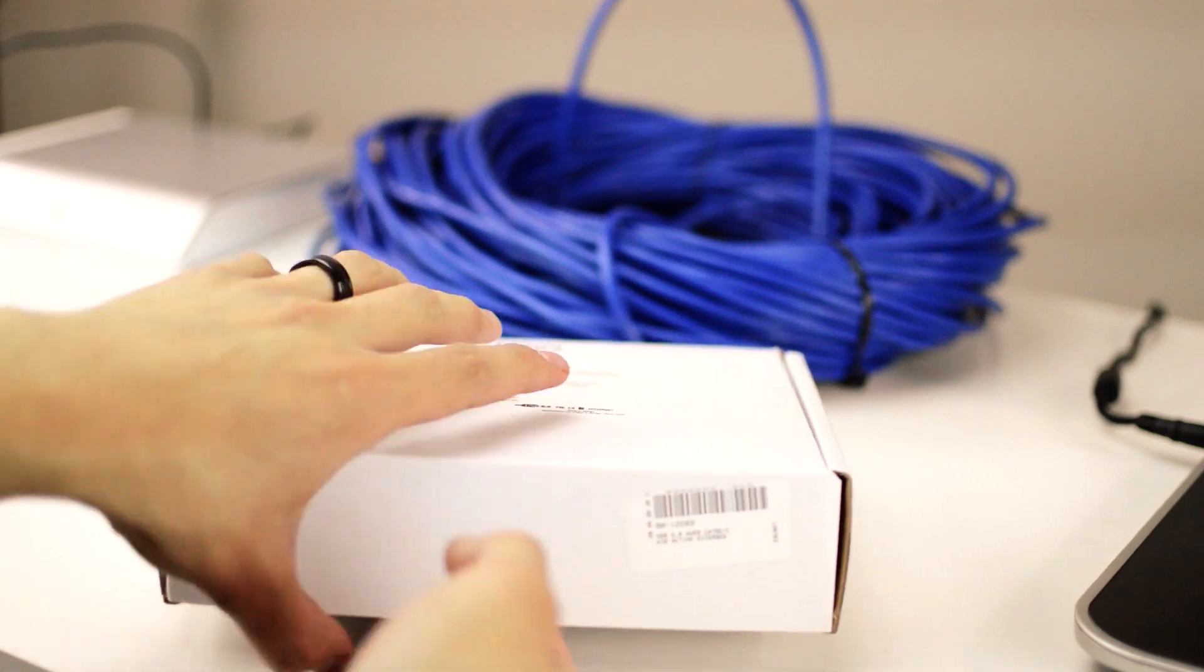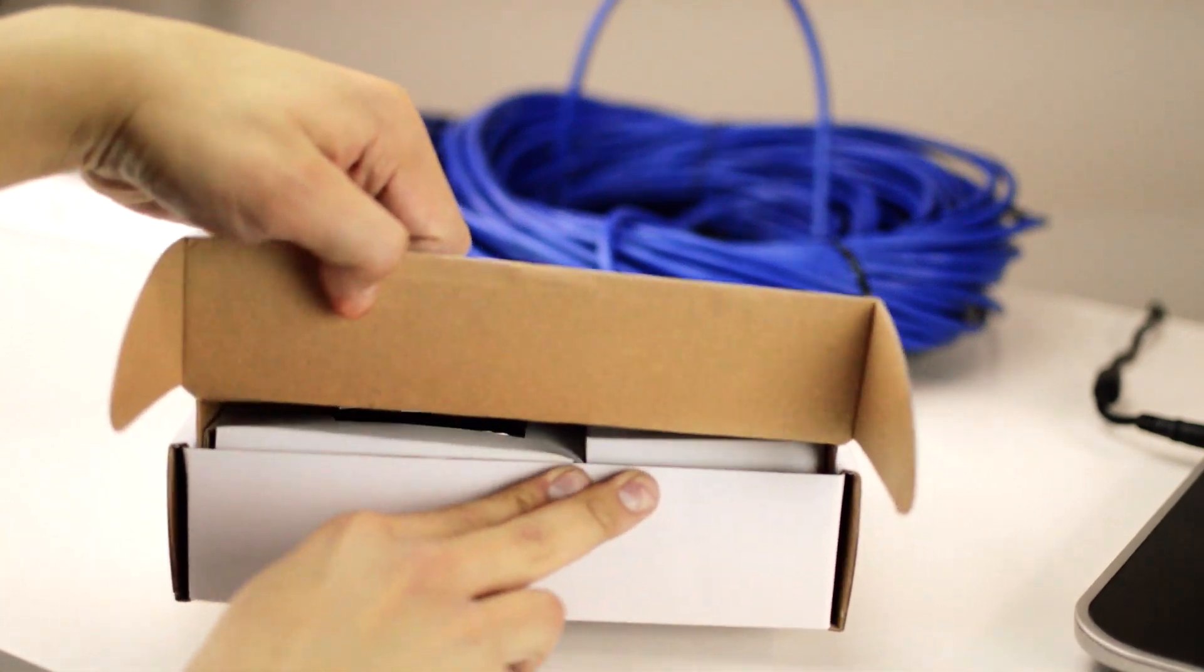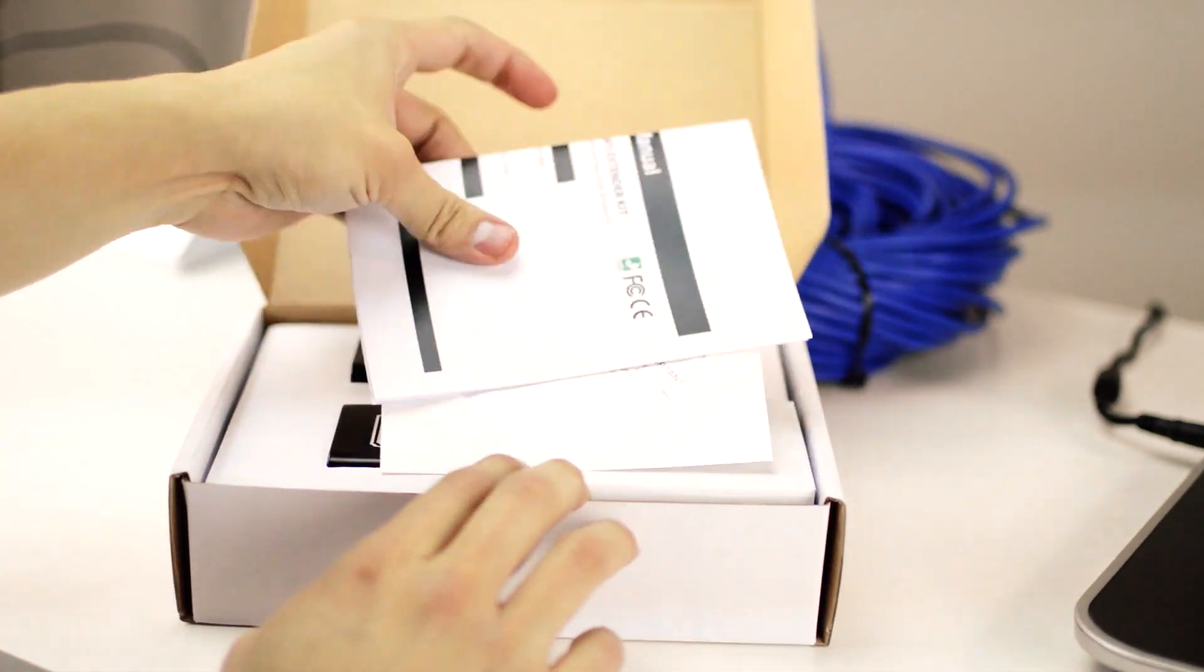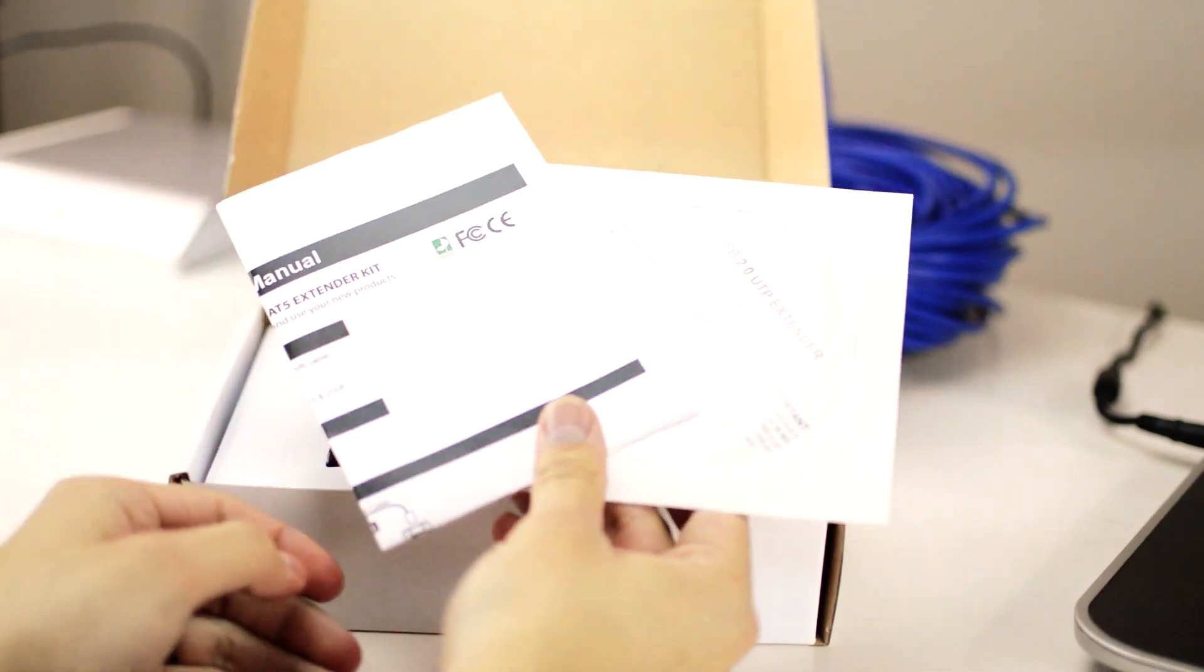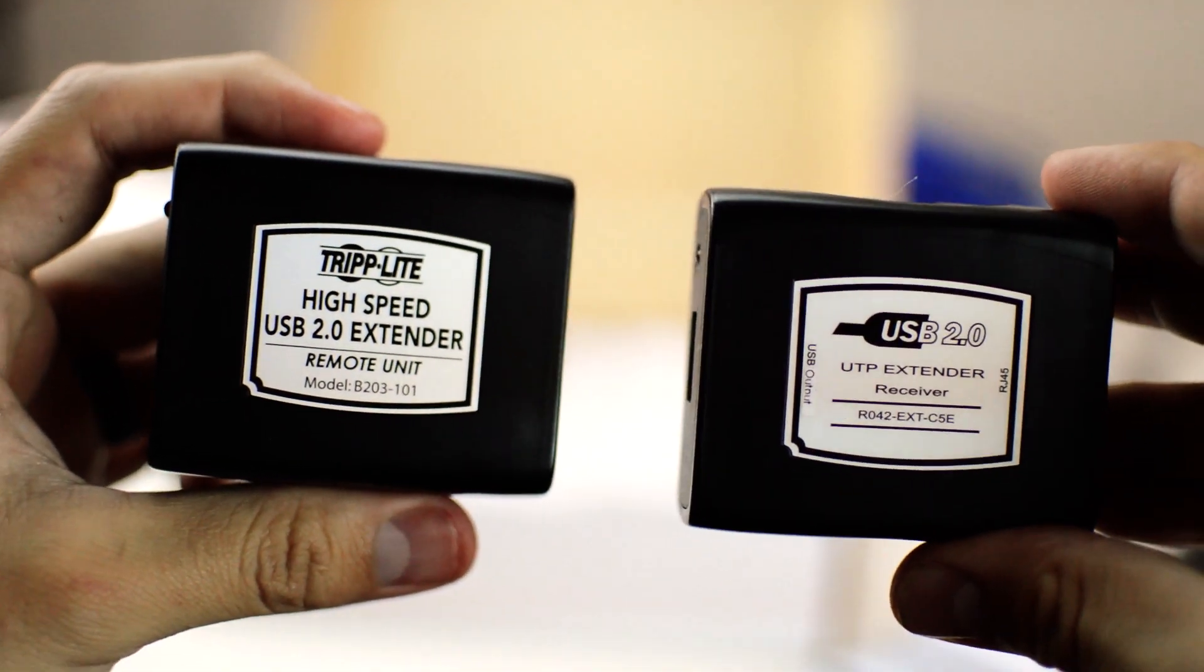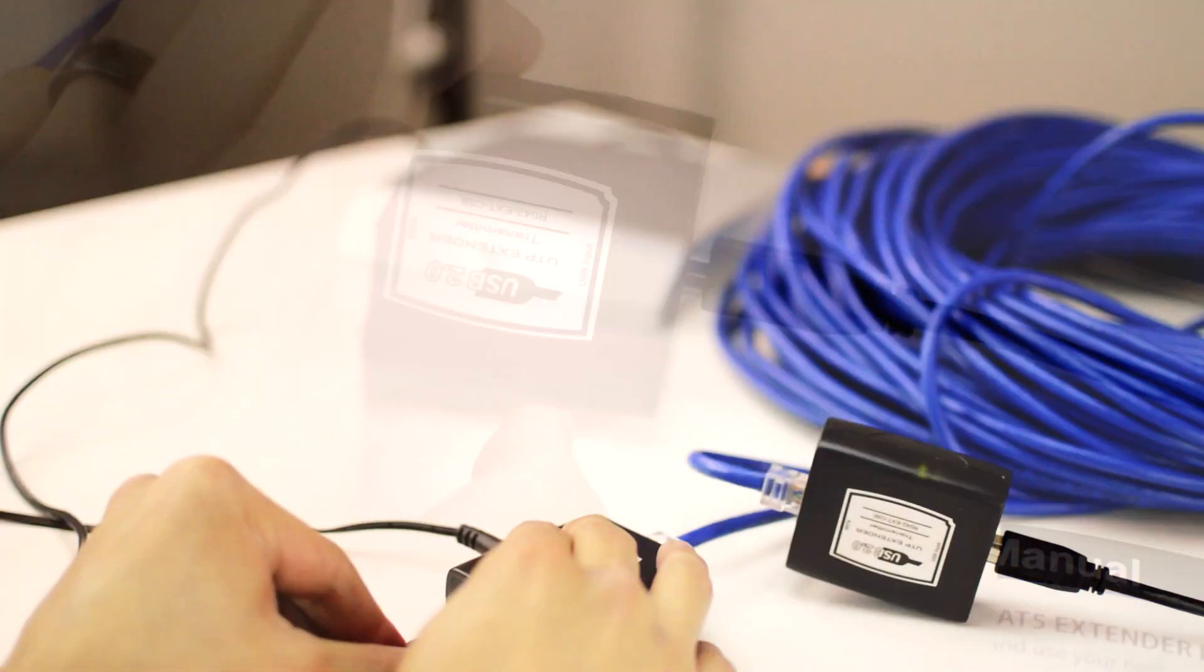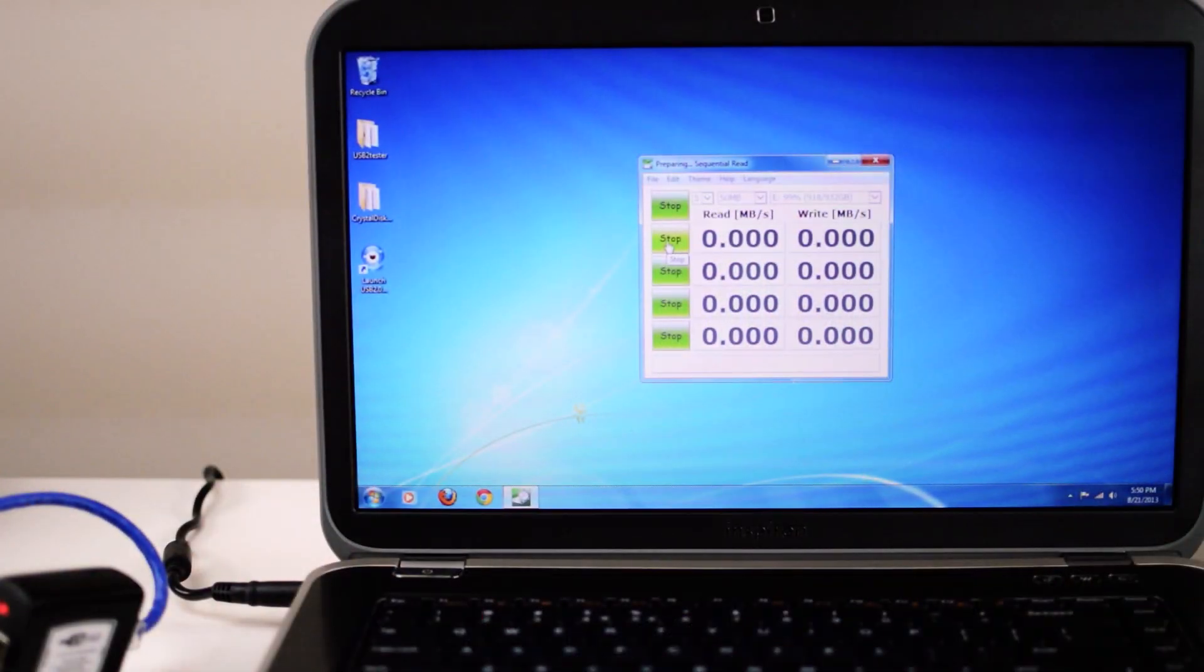Next up, we have this USB 2.0 extender from MilesTech. It also requires drivers to work, and it looks exactly identical to the one from Triplight, but with different stickers. So we plug it in and run Crystal Disk Mark.